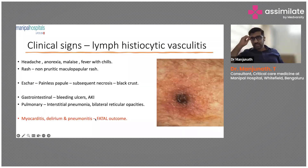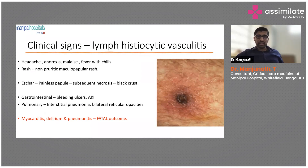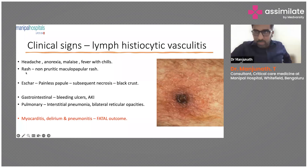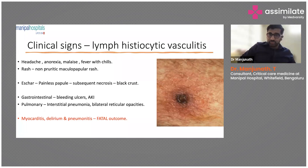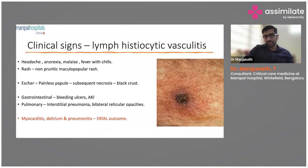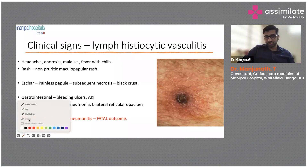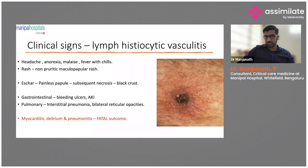The key pathogenic mechanism is lymphocytic vasculitis. Clinically: headache, nausea, malaise, fever with chills, and a non-pruritic maculopapular rash. Most importantly, an eschar forms — starting as a painless papule that undergoes subsequent necrosis and forms a black crust, as you can see here. Whenever you see patients with a tropical infection, please examine them from head to toe.